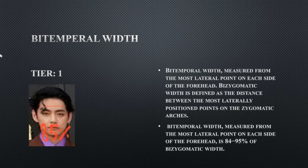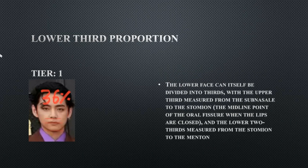His bitemporal width is tier 1 — the bitemporal width goes from the temple relative to the cheekbones, and his is at 85 percent, so he does have a good wide forehead. His lower third proportion — which can be divided into three parts each at 33 percent, not deviating more than three percent — is at 36 percent, which is at the higher end, making it tier 1, so that's perfect.